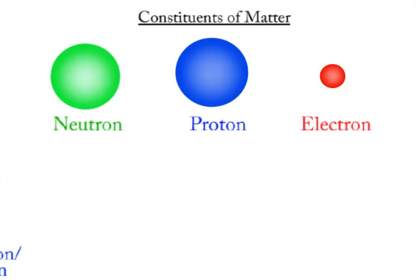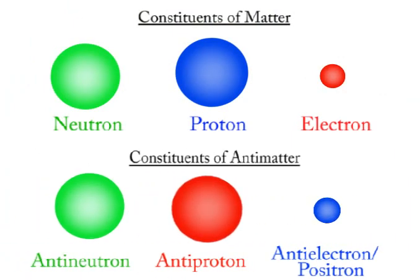So now to antimatter. Antimatter is essentially the same as normal matter except that it consists of anti-protons, anti-neutrons, and anti-electrons. Anti-electrons are also known as positrons. The difference between these particles and their corresponding anti-particles is that their charge is reversed — anti-protons have negative charge and anti-electrons, or positrons, have positive charge.